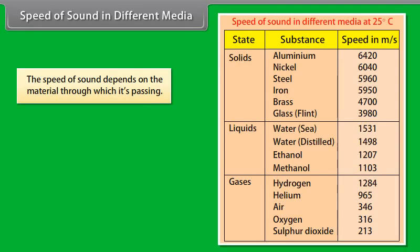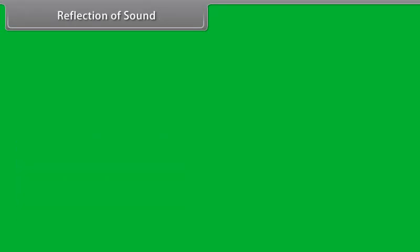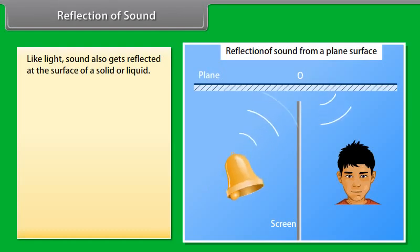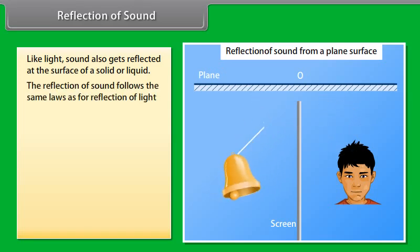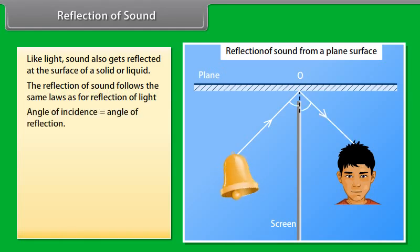Speed of sound in different media. The speed of sound depends on the material through which it is passing. It is greater in solids than in liquids or gases because the molecules in a solid are closer than in a liquid or gas. In this table you can find the speed of sound in different media at 25 degrees Celsius.